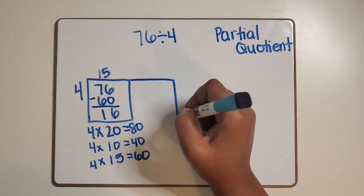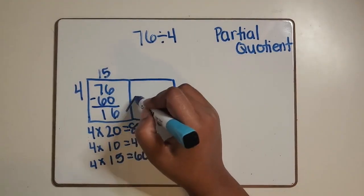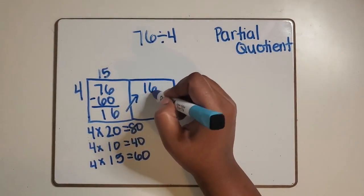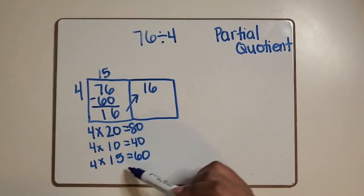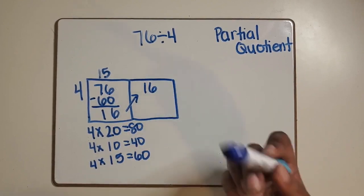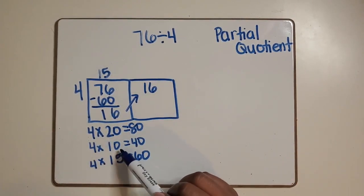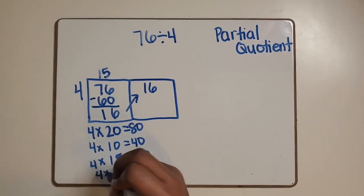We are going to extend our rectangle, but now we are going to start with the 16 as the total. The facts that we have listed so far are all greater than 16, so we can no longer use them. Maybe a student knows that four groups of four equals 16.